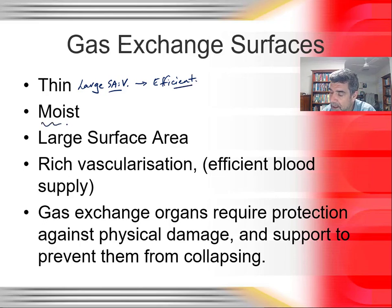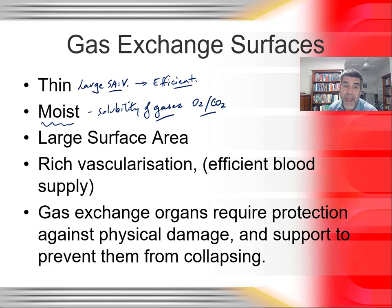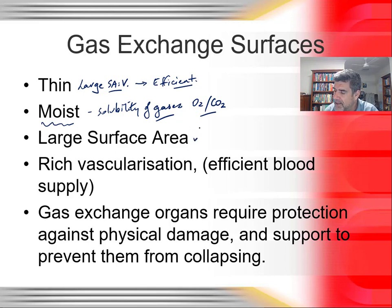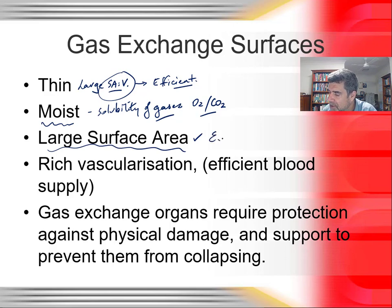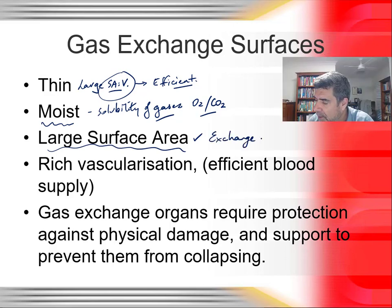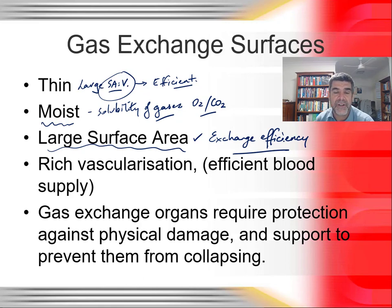Gas exchange surfaces need to be moist, and that's about the solubility of gases. The gases we talk about — oxygen and carbon dioxide — are slightly soluble in water, and that's the form in which they tend to move across the gas exchange surfaces. The large surface area is all about exchange efficiency, so a bigger surface area means there are more places where gas exchange can occur.